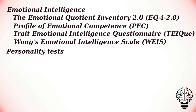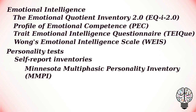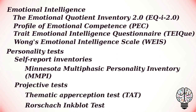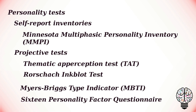The first type is self-report inventories, which involve having test takers read questions and then rate how well the question or statement applies to them. The most common self-report inventory is the Minnesota Multiphasic Personality Inventory. The second type is projective tests, which involve presenting the test taker with a vague scene, object, or scenario and asking for their interpretation. Common examples include the Thematic Apperception Test and the Rorschach Inkblot Test. Other commonly used personality tests are the Myers-Briggs Type Indicator (MBTI) and the 16 Personality Factor Questionnaire.